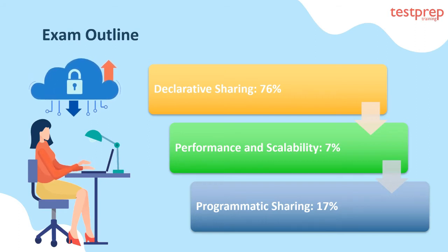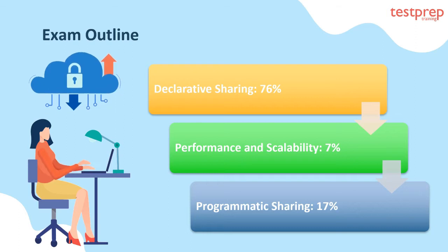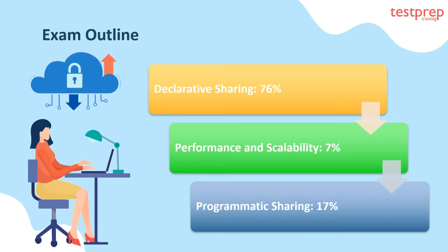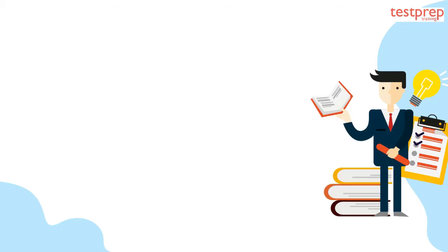The exam outline covers three main areas: first, Declarative Sharing, which comprises 76% weightage; second, Performance and Scalability, which comprises 7% weightage; third, Programmatic Sharing, which comprises 17% weightage.